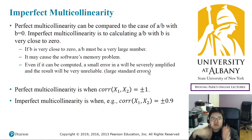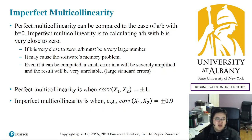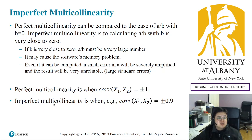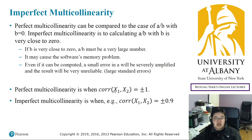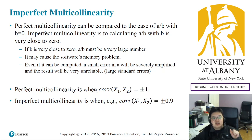Conceptually, I'm explaining this roughly and intuitively. A similar thing happens in regression when you have imperfect multicollinearity. Earlier I told you that multicollinearity happens when the correlation between x1 and x2 is plus or minus 1.